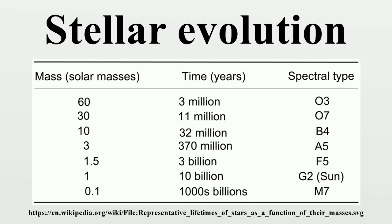This process causes the star to gradually grow in size, passing through the sub-giant stage until it reaches the red-giant phase. Stars with at least half the mass of the Sun can also begin to generate energy through the fusion of helium at their core, whereas more massive stars can fuse heavier elements along a series of concentric shells.